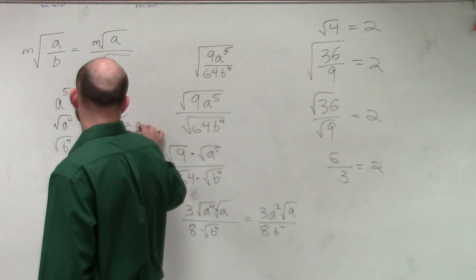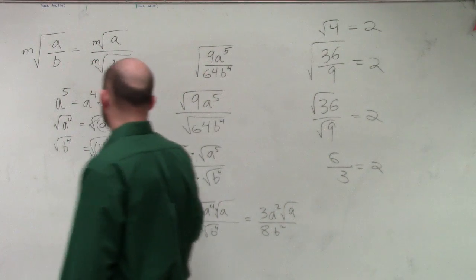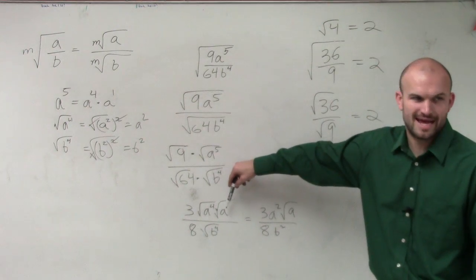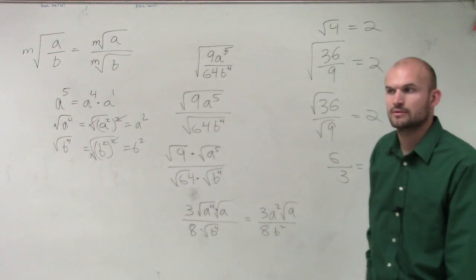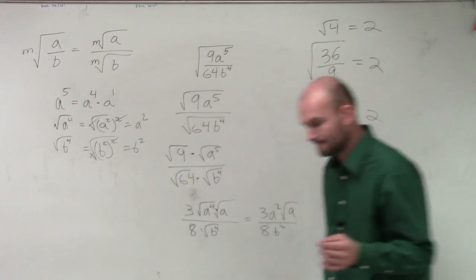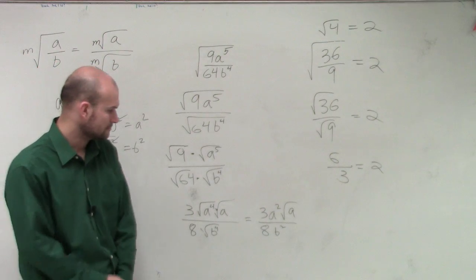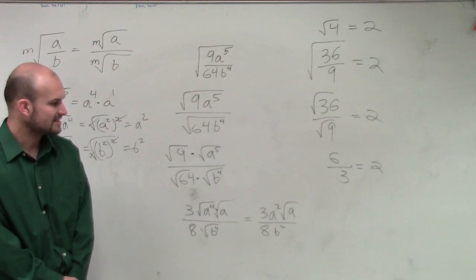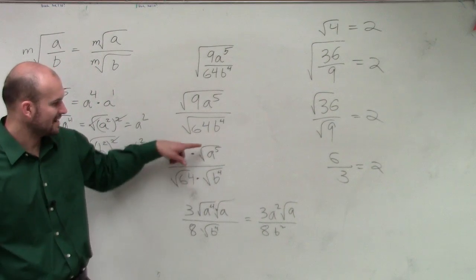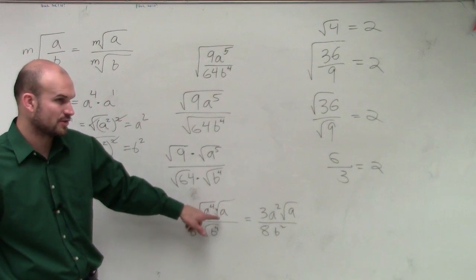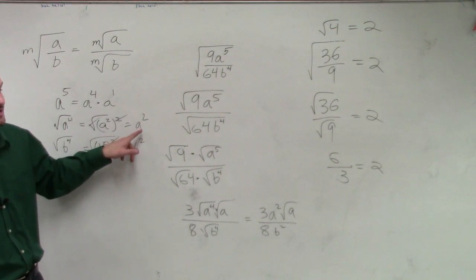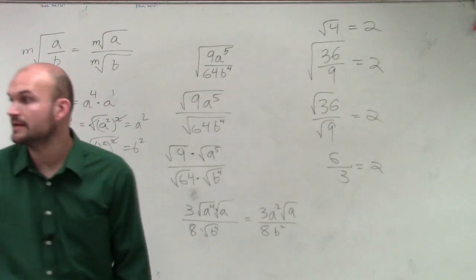Because we got the a squared and the b squared from here. But there's an extra a, which you can't take the square root of, so we write it right there. Questions? Yes? 3 times a squared times square root of a. I broke down a to the fifth as square root of a to the fourth times the square root of a. Then I can take the square root of a to the fourth as a squared. Yes?